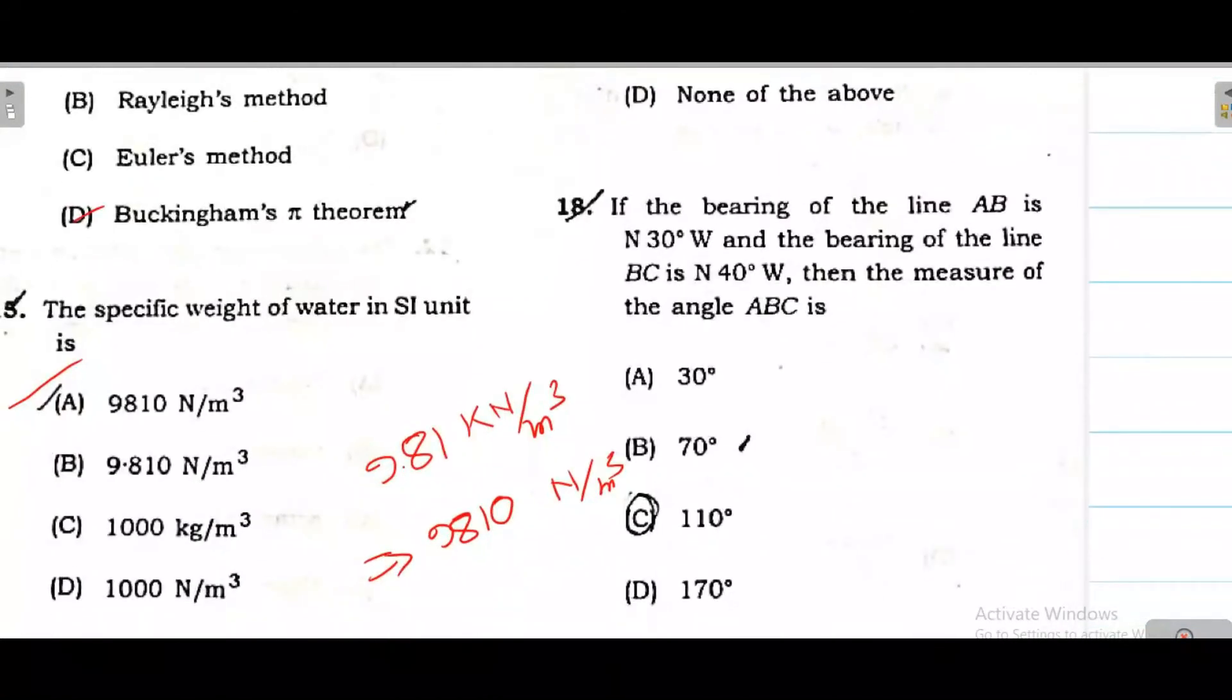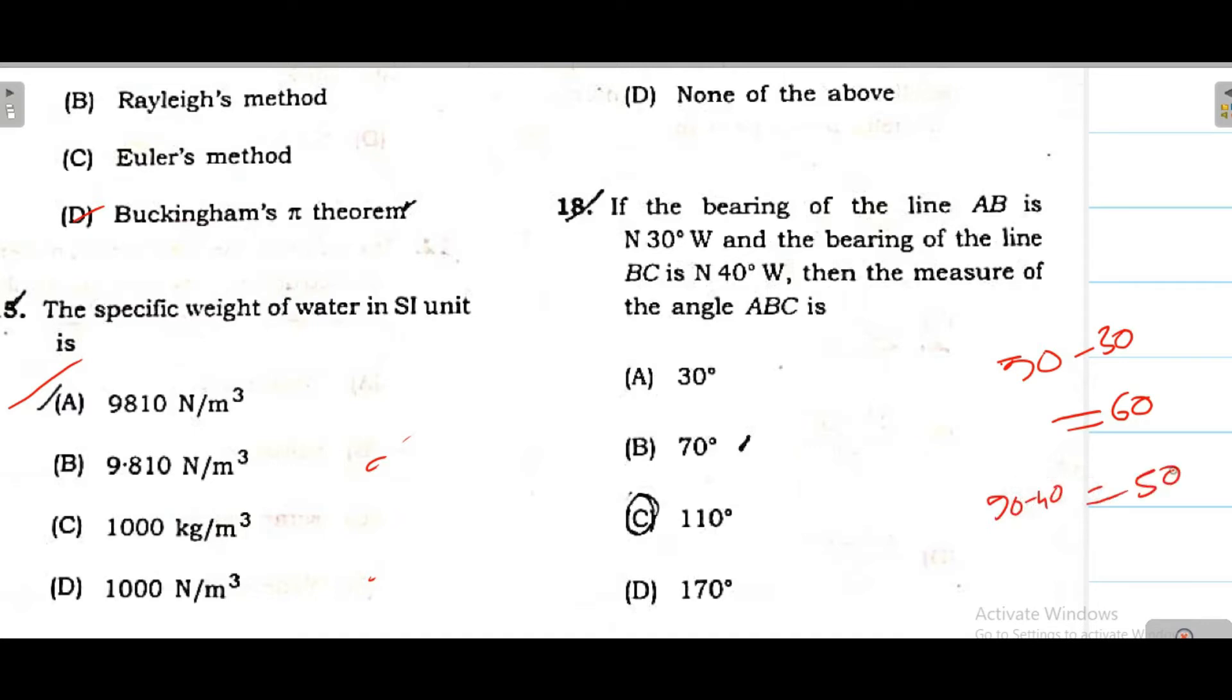Question number 18. This question asks to find the internal angle, the major angle. The bearing is S30 degrees west. If you find this, 30 plus 90 minus 30, that is 60 degrees. And this bearing is N40 west, that will be 90 minus 40, that means 50. If you add up 60 plus 50, that is 110, which is the answer. There are formulas to derive this, with explanations. For explanation, refer to books. Within seconds you can solve these questions.